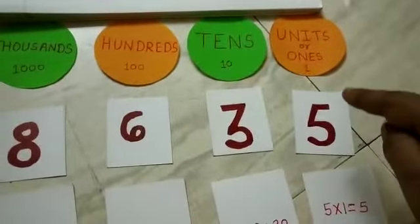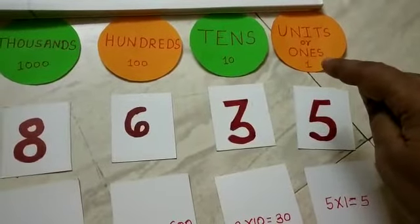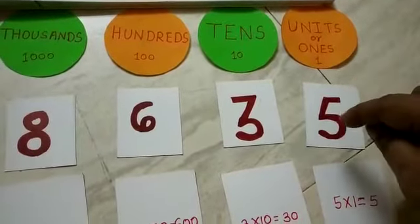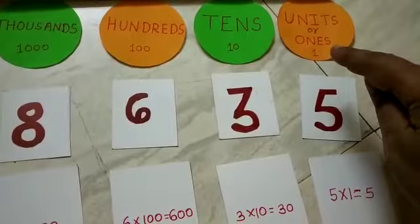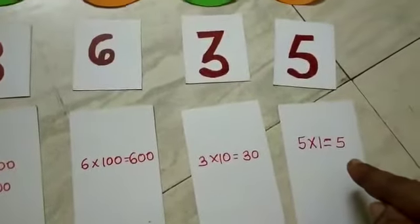Now each digit we will be multiplying with the value of that house. So 5 is in units house, so value of units is 1, so 5 multiplied by 1 gives you 5.